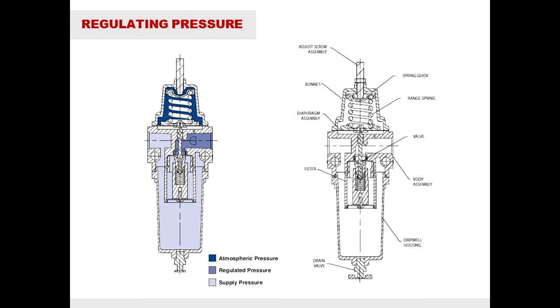If the regulated pressure becomes too high, an upward force on the diaphragm occurs. This upward force, in turn, closes the valve, allowing the pressure to lower back down to equilibrium.